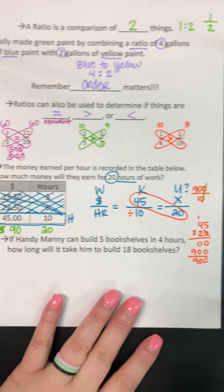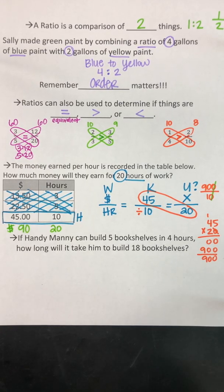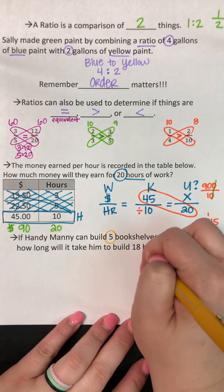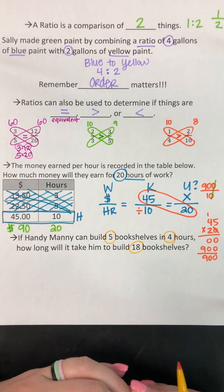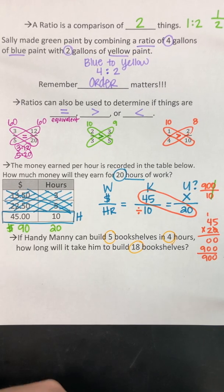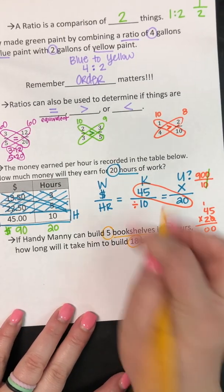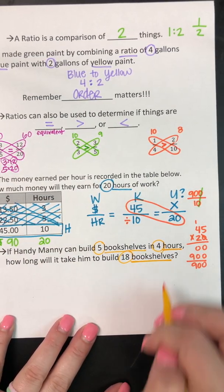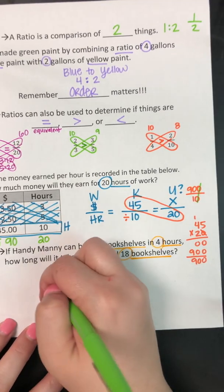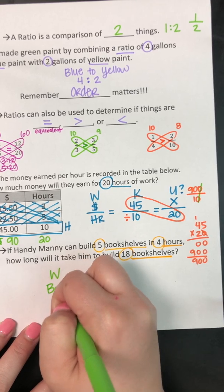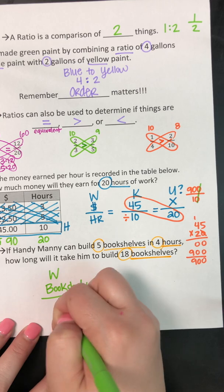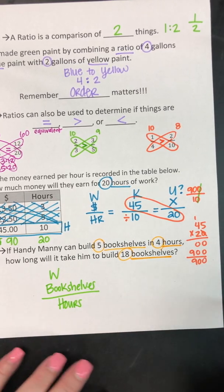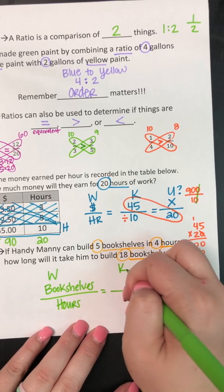The last way you might see a proportion: if Handy Manny can build five bookshelves in four hours, how long will it take him to build 18 bookshelves? In questions where you need a WKU, they'll typically give you three numbers. We're making a ratio — a comparison of two things — bookshelves to hours. Our words will be bookshelves over hours. It doesn't matter which one you put where, as long as you're consistent when you set up the known and unknown.